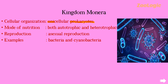Mode of nutrition: Kingdom Monera feeds both autotrophically and heterotrophically. Autotrophs are organisms which can prepare their own food, while heterotrophs cannot prepare their own food and depend on other organisms for their nutritional needs. They reproduce only by asexual means. Examples include bacteria and cyanobacteria, as seen in the image.